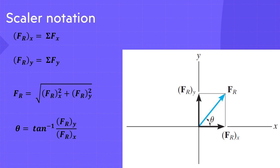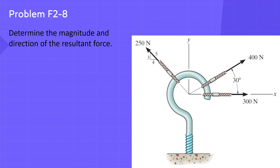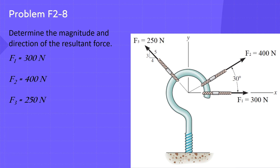Let us now solve a problem. For the shown forces acting on screw eye, determine the magnitude and direction of the resultant force. Let F1 equal 300 newtons, F2 equal 400 newtons, and F3 equal 250 newtons.